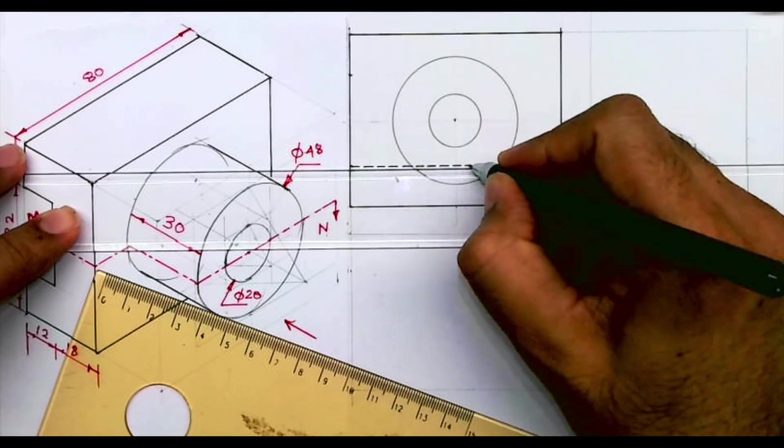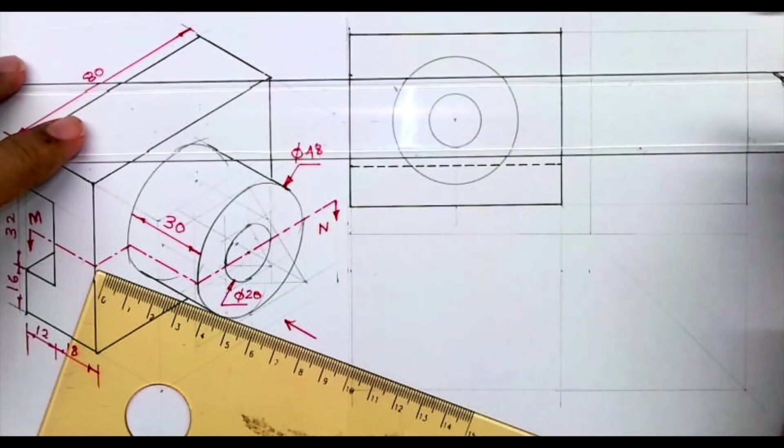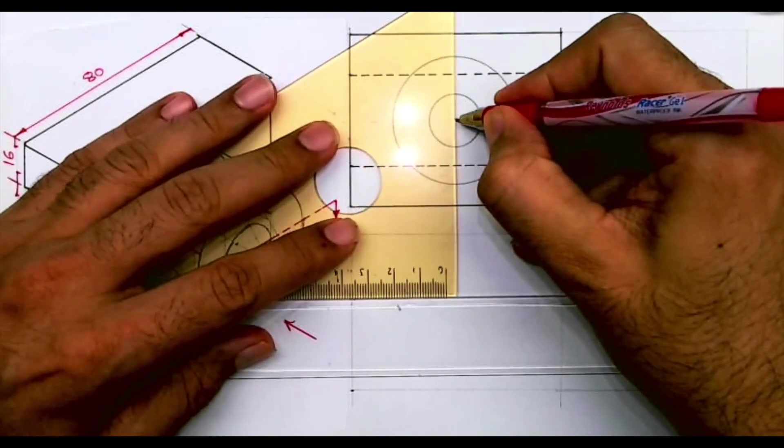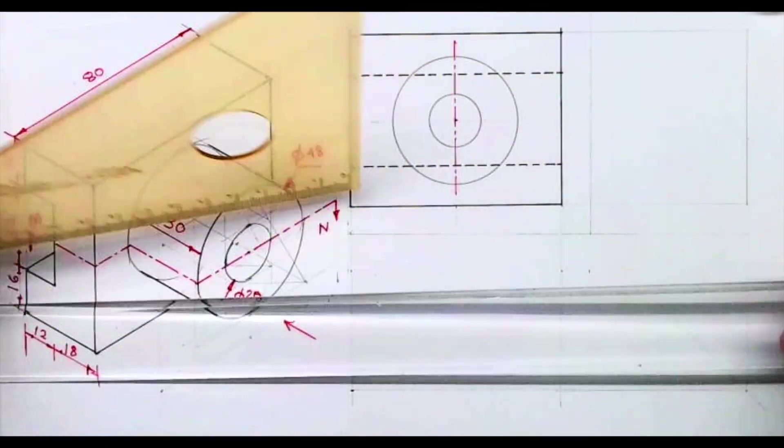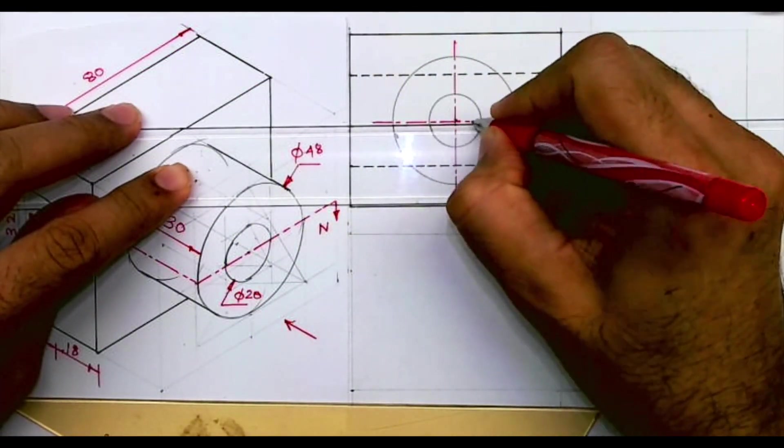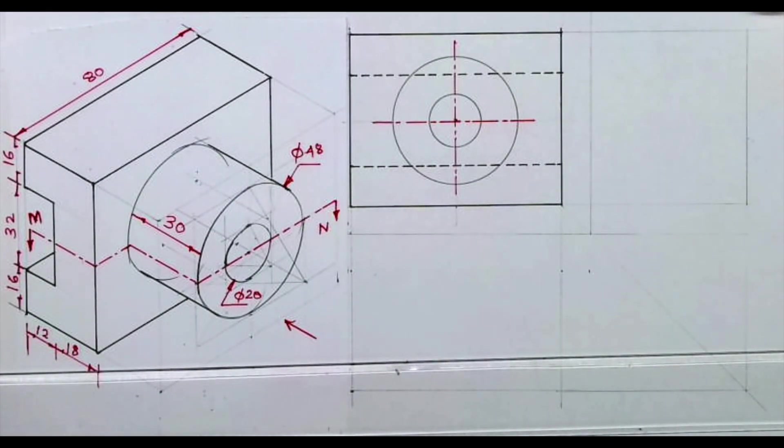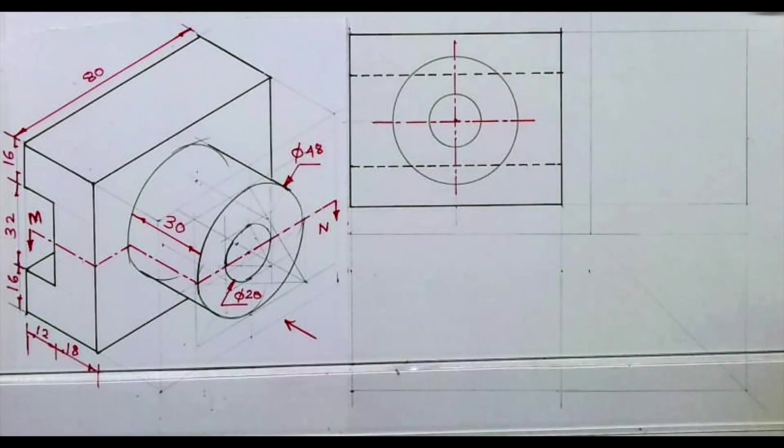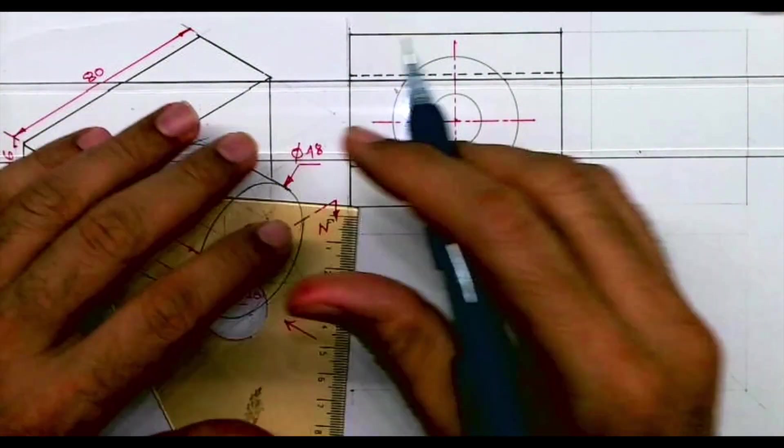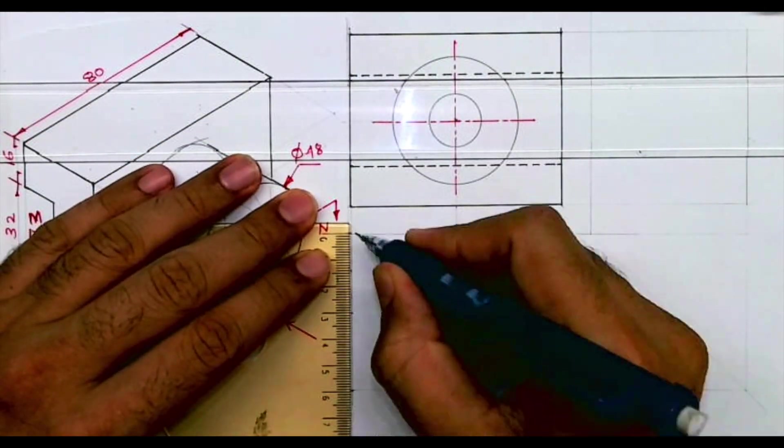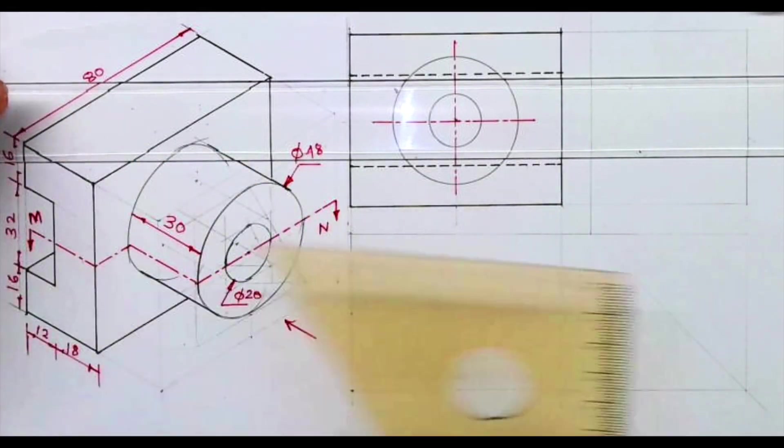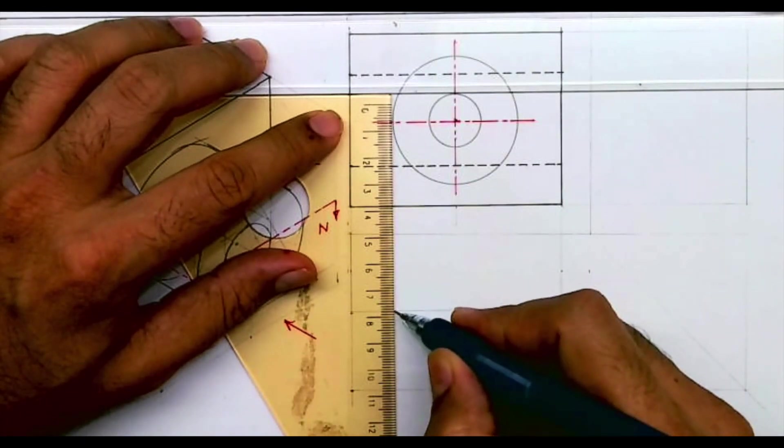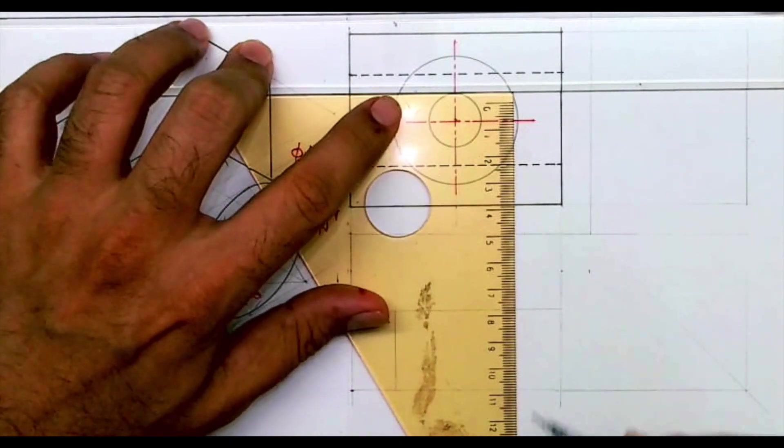So we are done with front view. Now we'll see top view. We'll take 30 from here and we'll draw line and we'll extend this point extreme left and right of the circle.